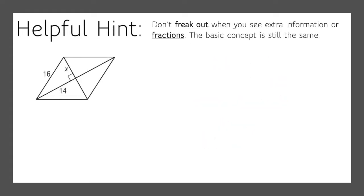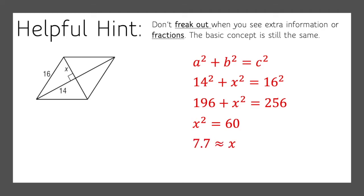Now sometimes you'll see figures that have a lot of stuff going on. But don't freak out if you see extra information or fractions. The basic concept is still the same. So if you look at this diamond here, there's still a right triangle inside. So we can still use the Pythagorean theorem. So we're missing one of the legs, x. So we can say that 14 squared plus x squared equals 16 squared. And we know that 16 squared is by itself because that's the hypotenuse across from the right angle. So 14 squared is 196. 16 squared is 256. So we'll subtract 196 from both sides. x squared equals 60, and x is approximately 7.7.